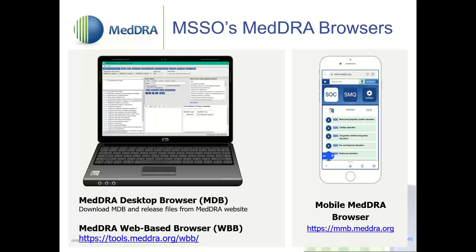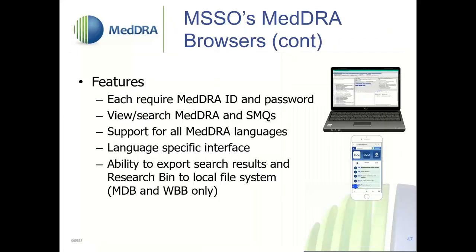Let me introduce the browsers. We have the desktop browser, the mobile browser, and the web-based browser. The desktop needs to be downloaded. All of these require your MedDRA ID and password, and you can search using both SOC and SMQ views with support in all languages. Search results can be exported to your local file system from the web-based and desktop browsers, but not from the mobile browser. You can also preview upcoming supplemental changes using the supplemental view on the web-based browser — for example, seeing what terms will be added in MedDRA version 26. The desktop browser is useful for working offline. Advanced search options allow you to upload terms and run them against SMQs.